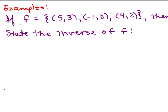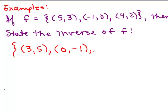Let's look at an example. If f equals these three ordered pairs: (5, 3), (−1, 0), and (4, 2), state the inverse of f. We just take and reverse the x and y coordinates. So instead of (5, 3) we'll have (3, 5), (0, −1), and (2, 4).